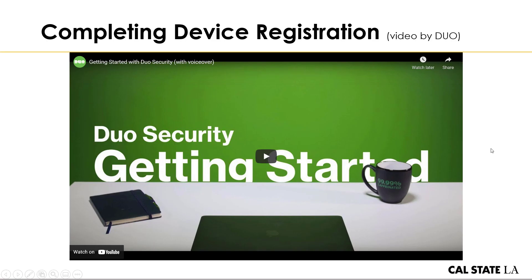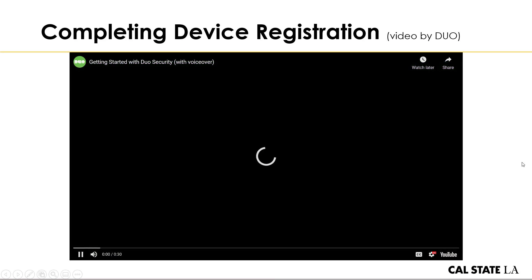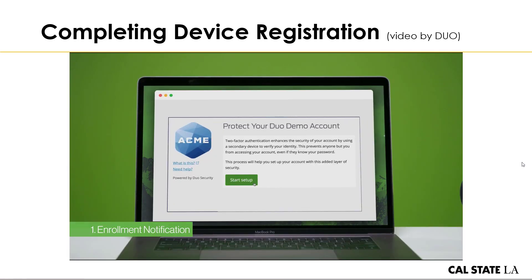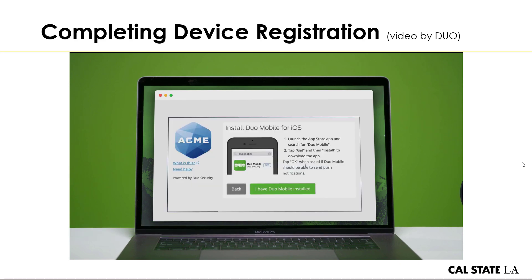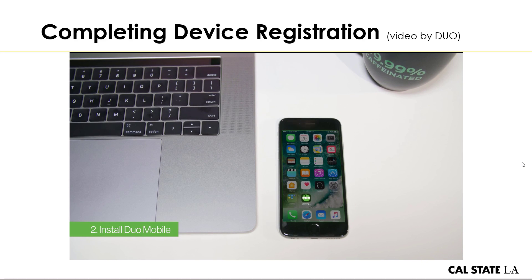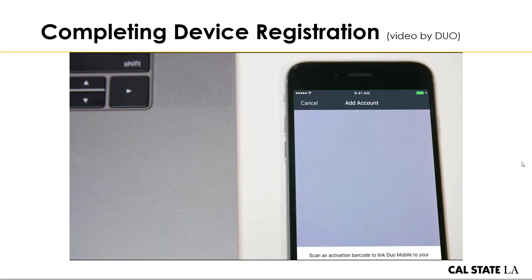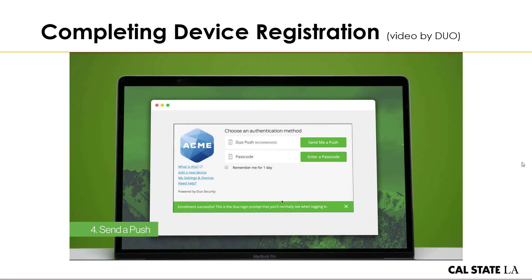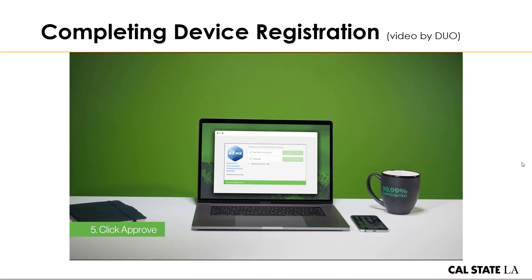I'm going to quickly play a video from Duo that shows what device registration looks like. You should receive a notification on how to get set up. Follow the on-screen instructions to add your mobile device for authentication. Download the Duo Mobile app from the App Store, scan the QR code on the screen with Duo Mobile. Next time you log in, clicking 'Send Me a Push' will send a notification to your phone — just hit Approve and you're securely logged in.